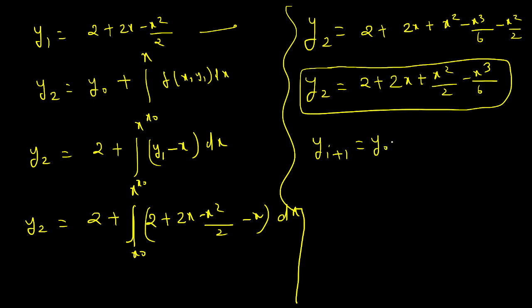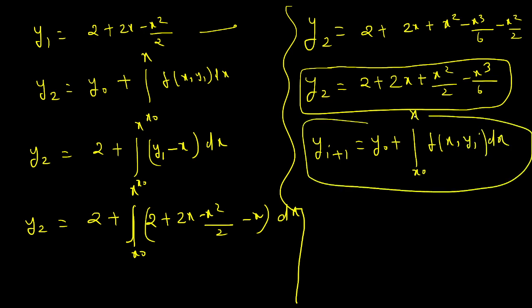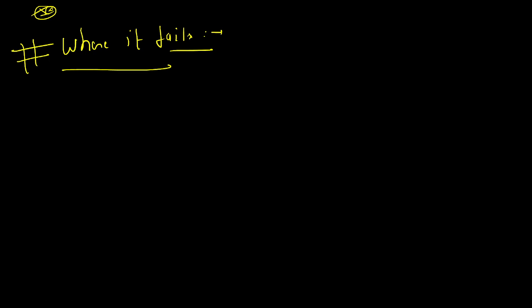For every iteration, y_(i+1) = y₀ + integral from x₀ to x of f(x, y_i) dx — you substitute the previous y value each time. Now it's important to understand where Picard's method fails: one must be able to perform the required integration, and sometimes we get complicated integrals that are very difficult to integrate. In that condition this method fails. In the next lecture I will discuss Euler's forward and backward method.